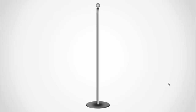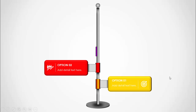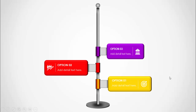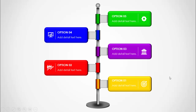In today's tutorial I'm going to show you how to create a five-options street signpost infographic slide in PowerPoint. This is how the slide works — I've created a pole, and when I click, the first option comes up. You can see option one, you can add detailed text along with the icon, and on the next click, with a different color, option two, three, four, and five appear.